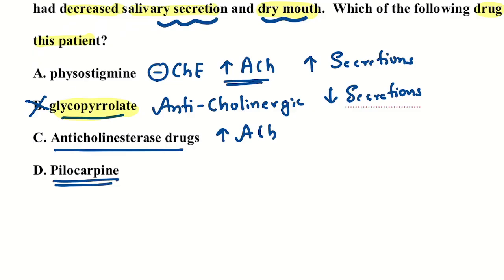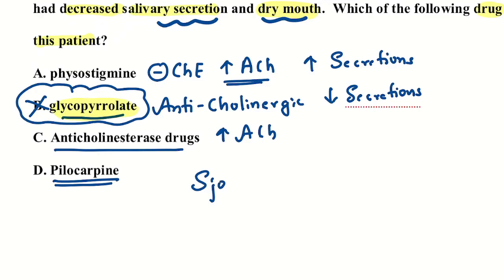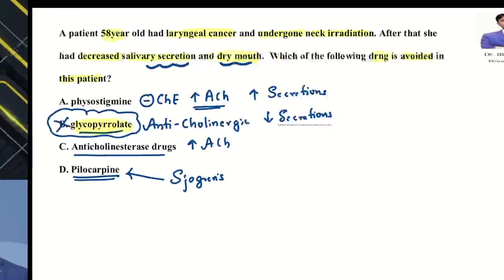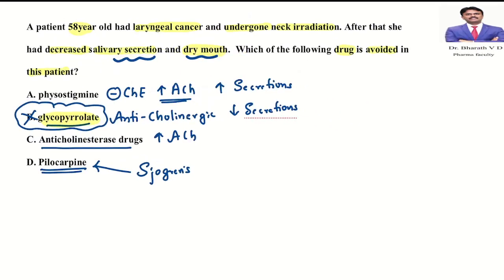So here the answer is glycopyrrolate is not used. For Sjögren's syndrome — a condition with dryness of mouth and dry eyes — we use a drug called pilocarpine. So the answer is B: glycopyrrolate.